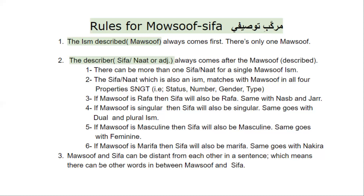One more rule: in murakkab-e-idafi, we learned that mudaf and mudaf ilayh come in succession — they come just after each other. But in masuf sifah, there can be other words in between masuf and sifah. When we look at an ayat, sometimes masuf is in the beginning and there are some words in between, and then sifah comes. So masuf and sifah can be distant from each other in a sentence.